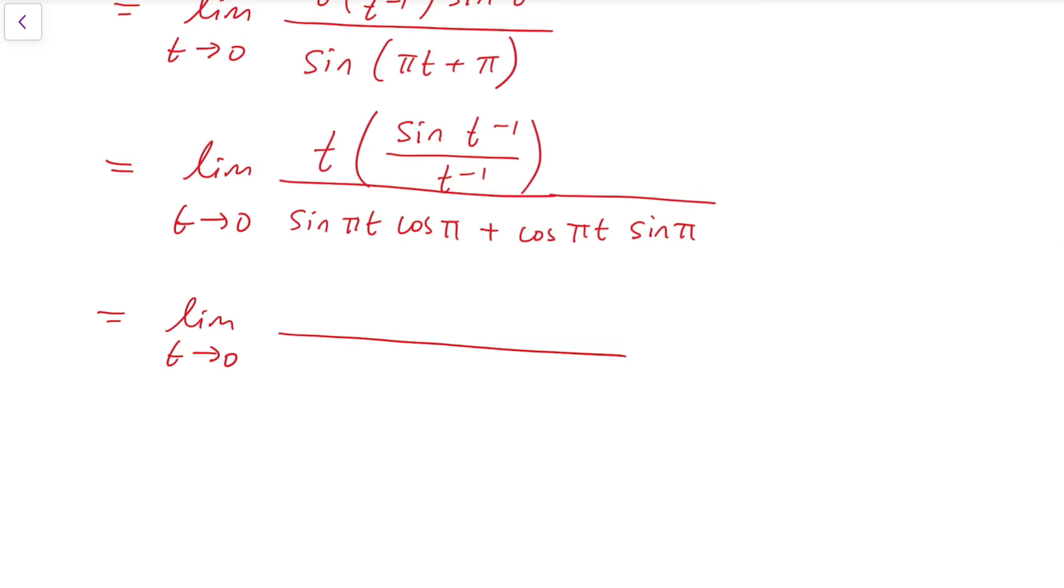For the denominator, we can actually cross out this term because sin(π) is 0, so this term will vanish. And for the other term, because cos(π) is -1, so it becomes -sin(πt). And we keep the same numerator.